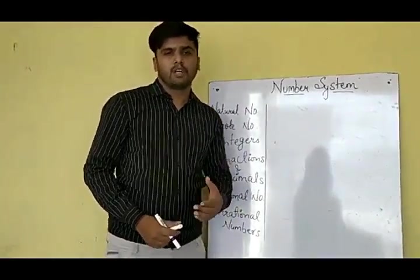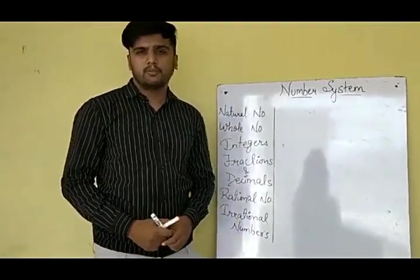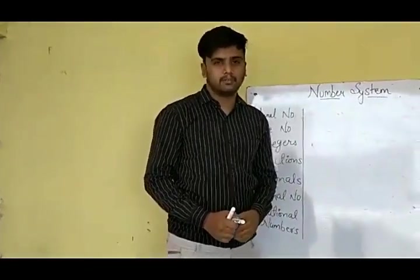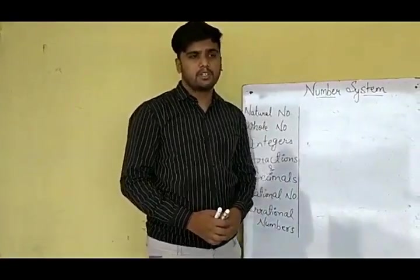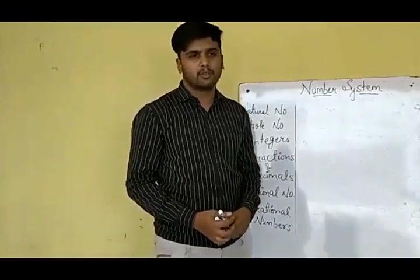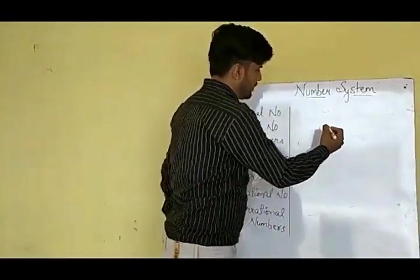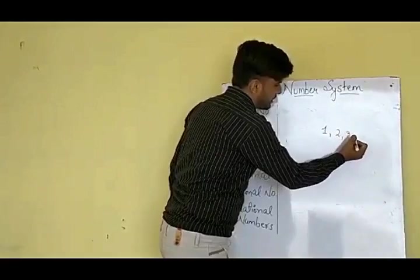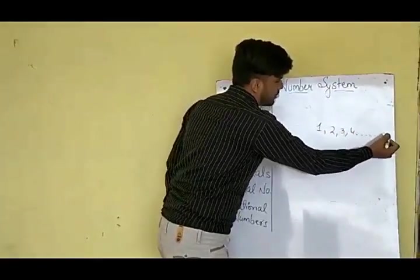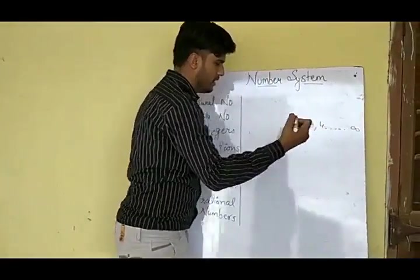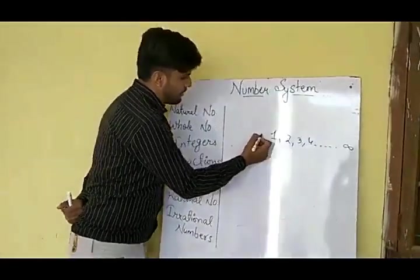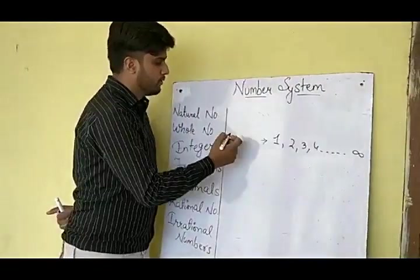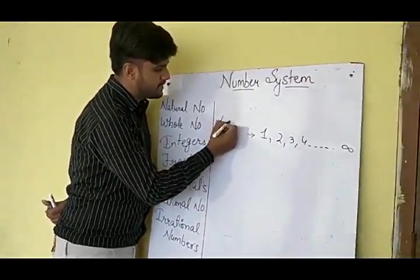Suppose we are sitting in a classroom and if we ask one of you to count the number of students in a class, naturally which number will come to your mind? Of course, you will start your counting from 1, then 2, then 3, then 4, and so on, up to infinity. So like this, when we start our counting from 1, 2, 3, and 4, these numbers are called Natural Numbers.